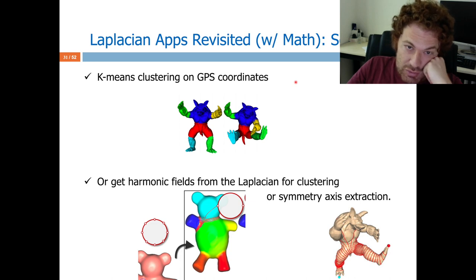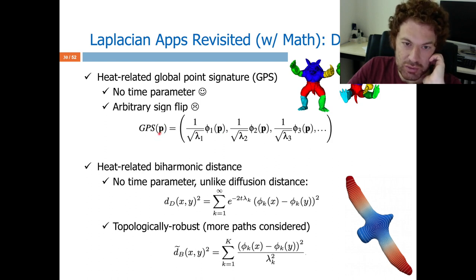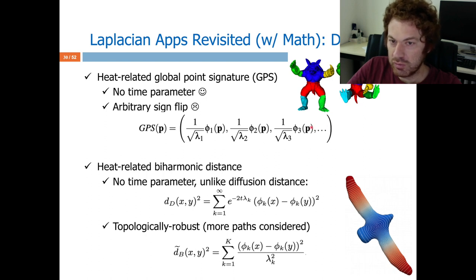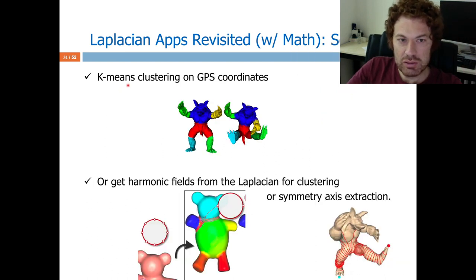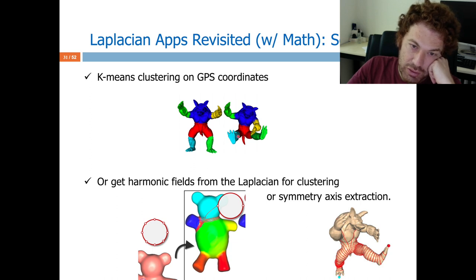Another application: segmentation. The GPS coordinates give a different set of coordinates for a given point P — using the first three gives X', Y', Z'. You can go to more dimensions thanks to the spectrum; in general they don't stay with three but go to 20 or 30 dimensions. In that space you do K-means clustering, which gives consistent clusters even if you change the pose. Because the Laplacian matrix spectrum does not change under isometric deformations or articulations, you can use it safely to get the same segmentation result under articulation.